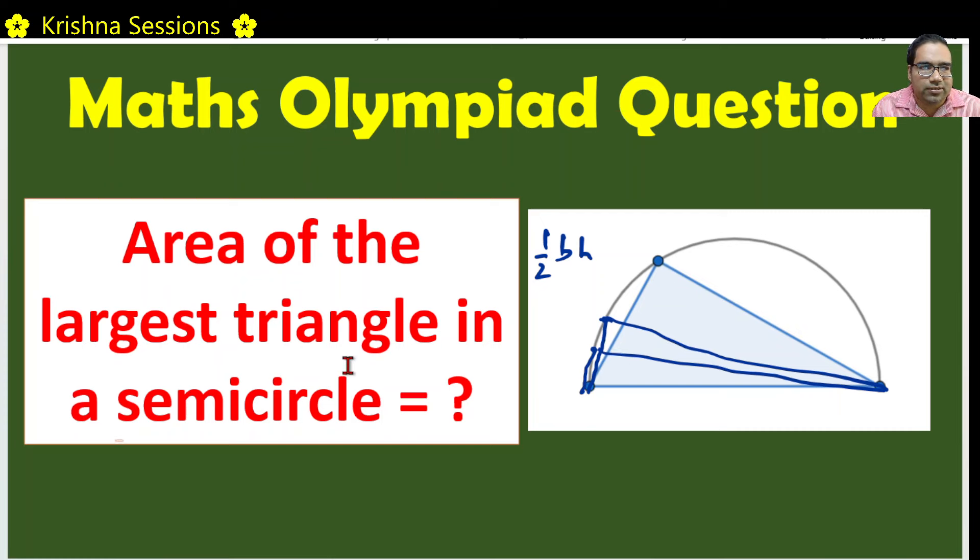So we need a triangle which has got the largest area, means the height should be the maximum. Where is the height maximum? The height would be maximum when the point is here, right vertically. Then the height is maximum for this triangle. Base will always remain same.